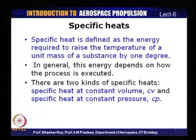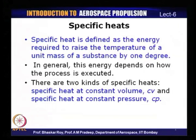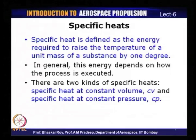Specific heat by definition is the energy required to raise the temperature of a unit mass of a substance by 1 degree. In general, this energy depends upon how the process is executed, and based on this we can define two kinds of specific heat: specific heat at constant volume and specific heat at constant pressure. Let us now consider an example of how we can define specific heat for a particular substance for a particular process.